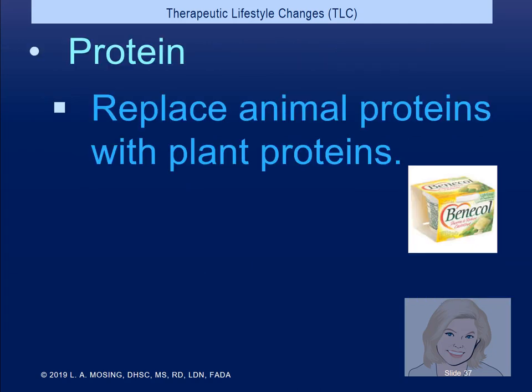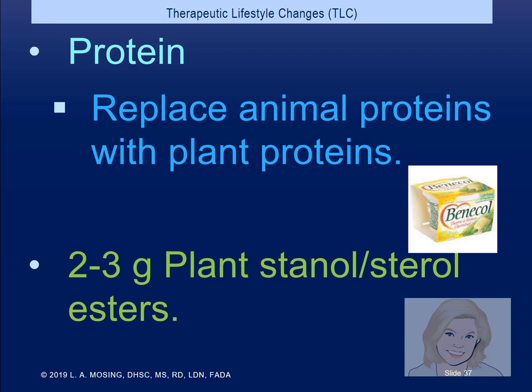Regarding protein: if you used to have Chick-fil-A for lunch and you now go with a bean burger, you've substituted an animal protein for a plant protein. Plant stanol esters are another secret agent. Benicol is the product most studies have been done on.